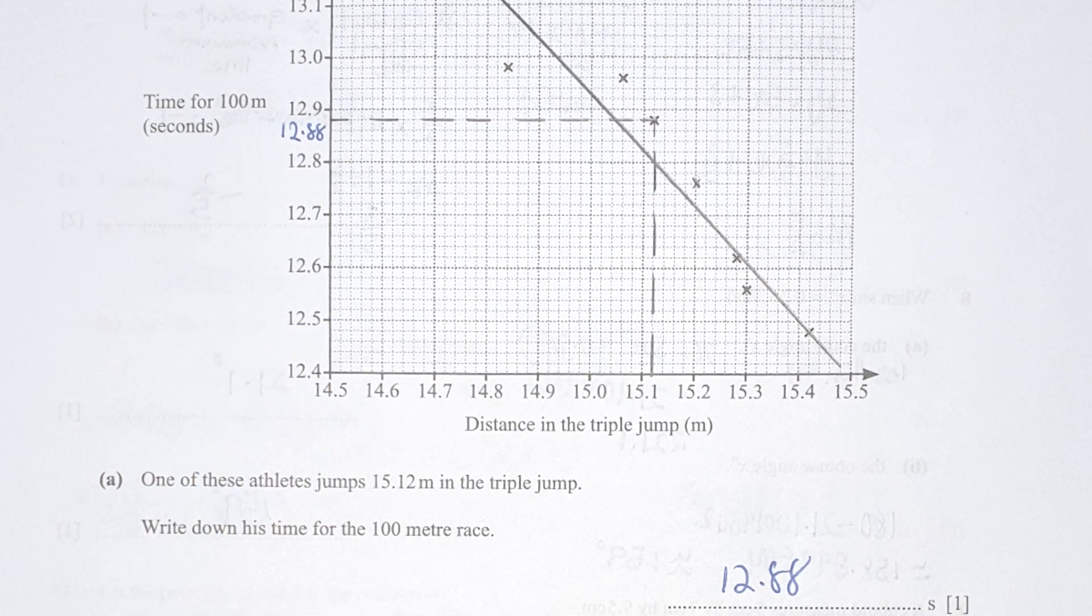For question 16, write down his time for 100 meter race. When it is having a jump of 15.12, from 15.12 I trace it back, the 100 meter time race should be 12.88.